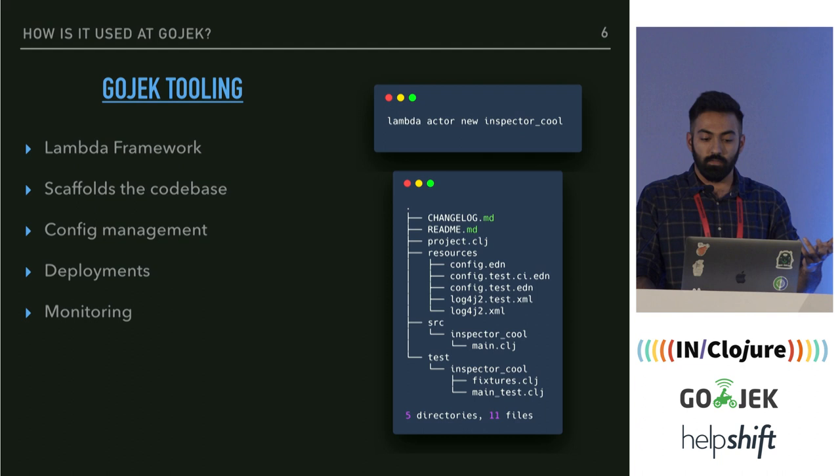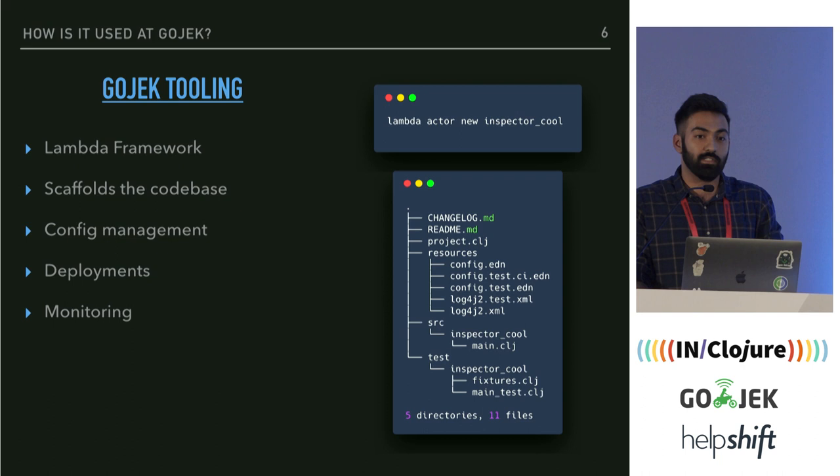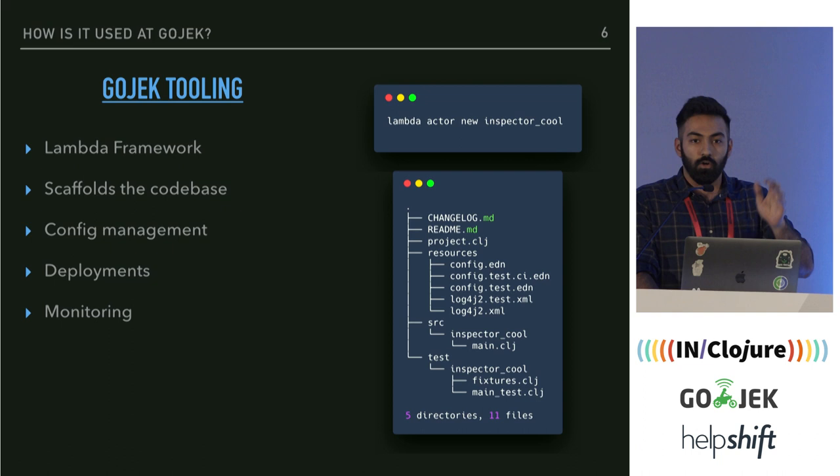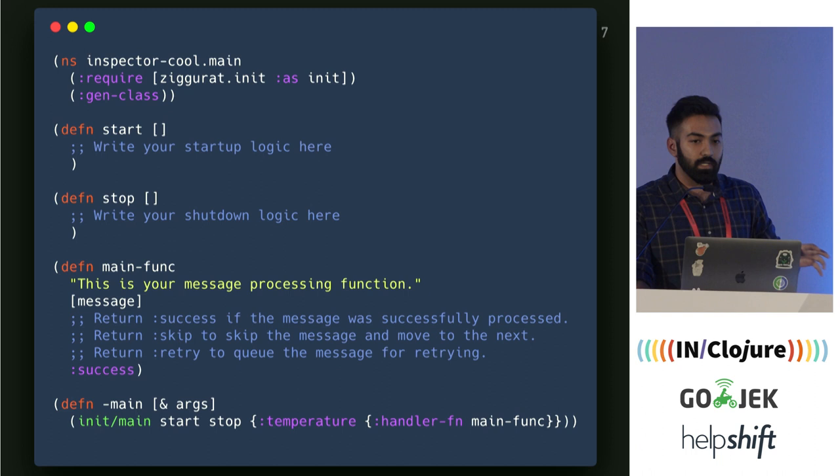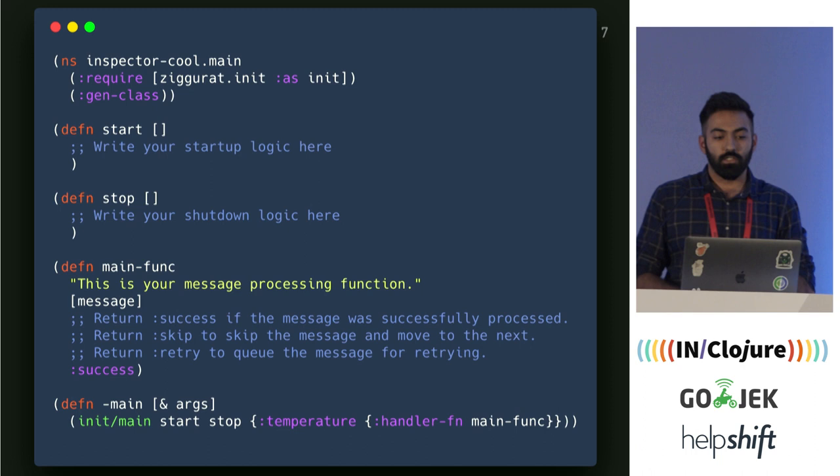As an example, let's call our service 'inspector-cool' because it's manning the AC. You say 'lambda acting new inspector-cool' and it scaffolds code for you — it generates a repo with all the correct code in place. We have a single namespace used for the logic. If you look at this code, you have a start function, a stop function, a main function, and then the entry point to the codebase.